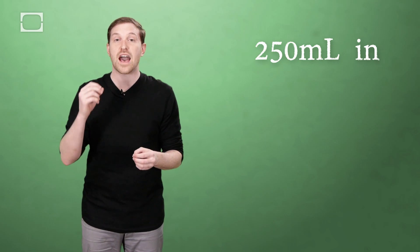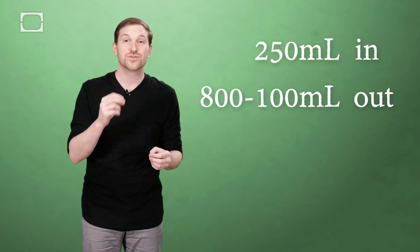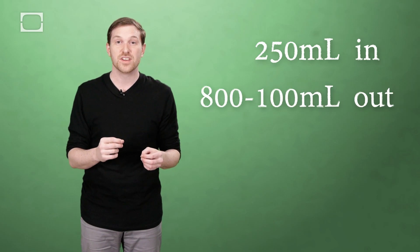So what are the numbers exactly? Well, if you ingest 250 milliliters of alcohol, your body will expel 800 to 1000 milliliters of liquid. That's one to four times more liquid lost than gained.